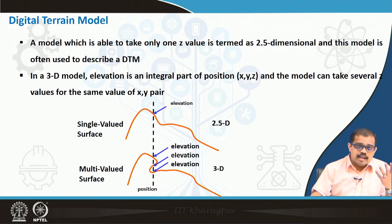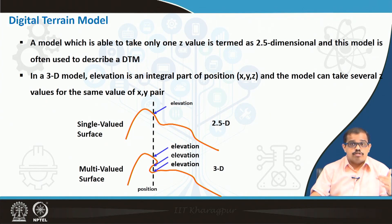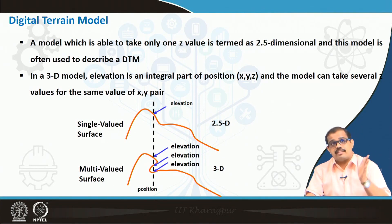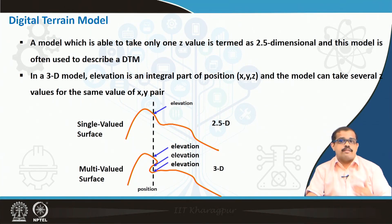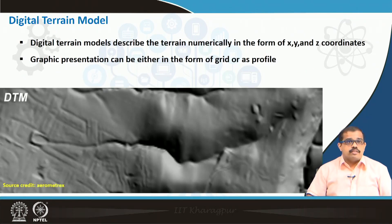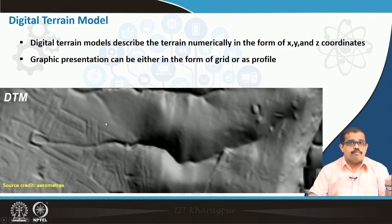Now, if there is elevation — elevation that is the integral part of any model — you can have one elevation, a second elevation, a third elevation in the same region. So multiple z values, z1, z2, z3, along with the x, y pair is called a 3D model, normally referred to as a digital elevation model. If you have a 2.5D model then it is a digital terrain model, whereas if you have a 3D model it is normally referred to as a digital elevation model. Digital terrain models describe the terrain numerically in x, y and z coordinates with a single z, and the graphic representation can be either in the form of a grid or a profile.